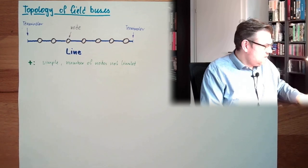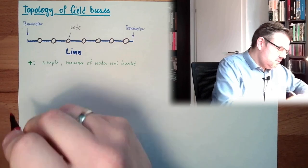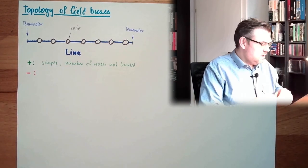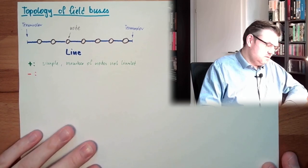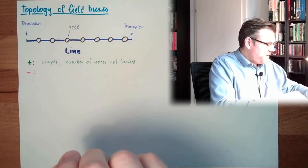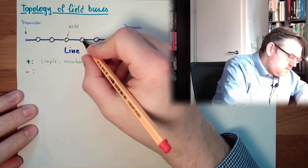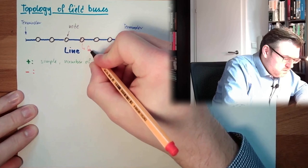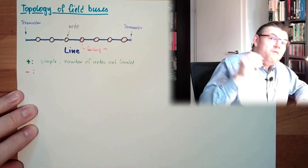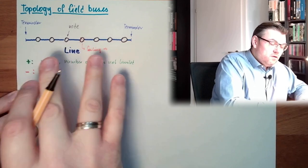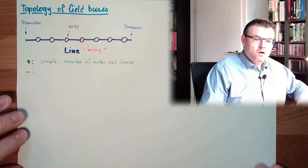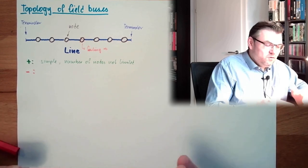What is the downside? Of course, there's a downside. If one node fails, we already have a problem. If this node is failing, we have two separate nodes. Not everybody can communicate with everybody. So, we are dividing in two parts.